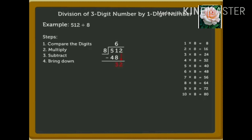Here, 32 is greater than 8, so we can divide it by 8. 4 times 8 is equal to 32. Write 4 in the ones place in the quotient and the number 32 under 32. Now, subtract 32 from 32, which equals 0.